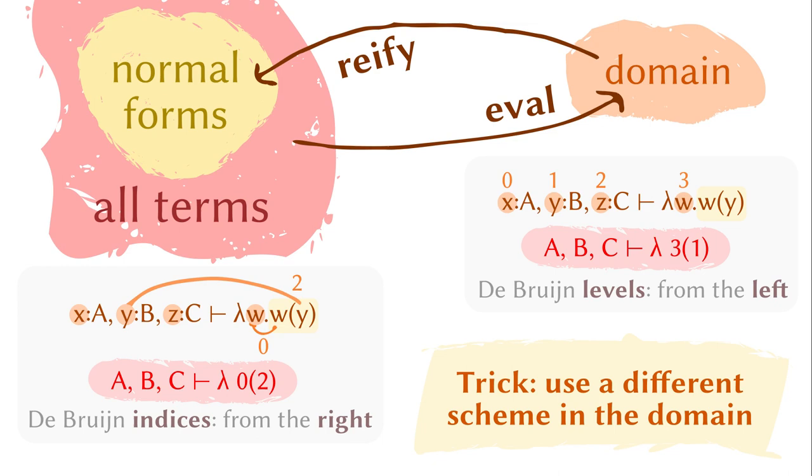The two indexing schemes are called de Bruijn indexes and levels, respectively, named after the Dutch mathematician Nicholas Govert de Bruijn. By the way, with a separate domain, it also makes sense to call the second stage ratification. It constructs an actual term out of something from the domain.